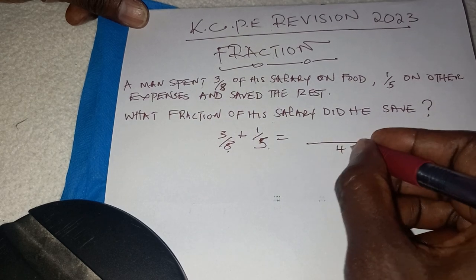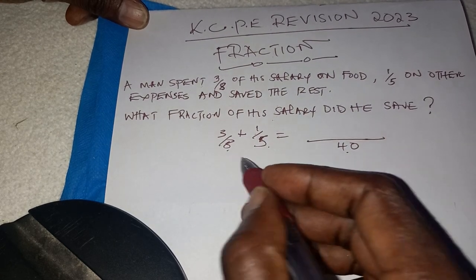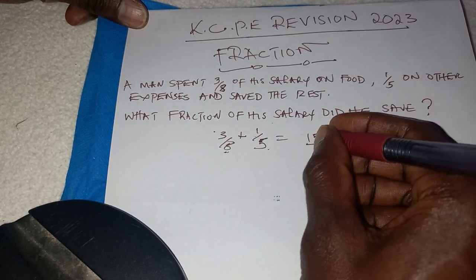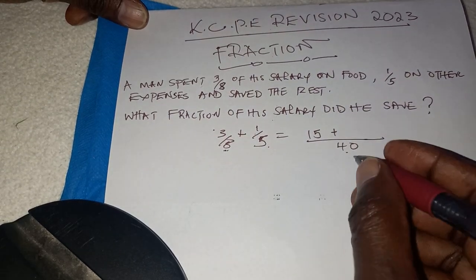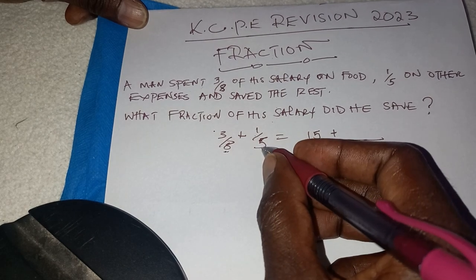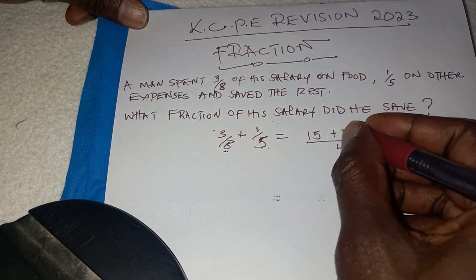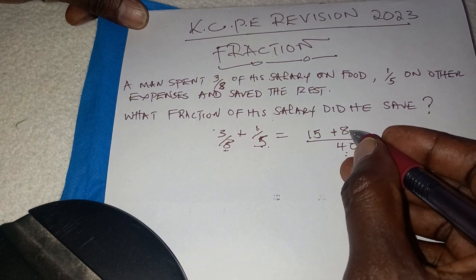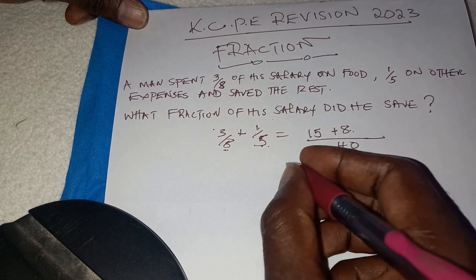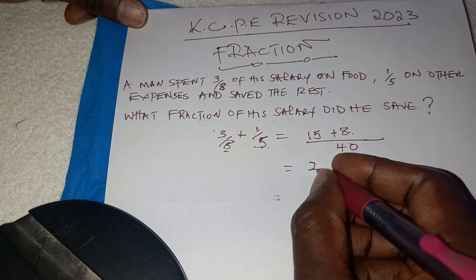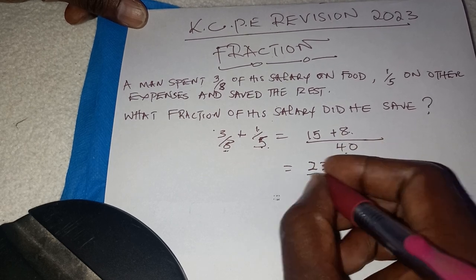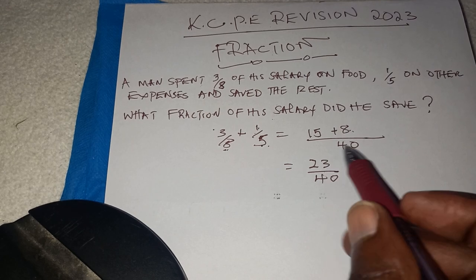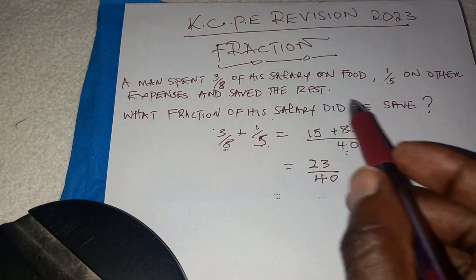You get 40. 40 divided by 8 gives you 5, times 3 gives you 15. Plus 40 divided by 5 gives you 8, times 1 gives you 8. So you have 15 plus 8, which gives you 23. That is 23 over 40 — the fraction which was spent on food and other expenses.